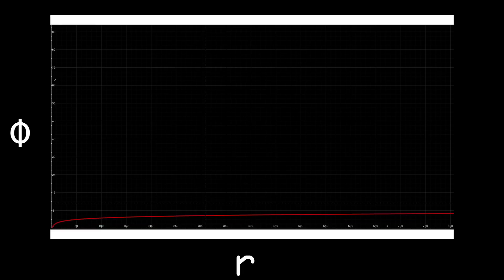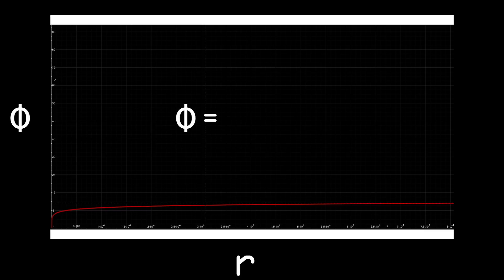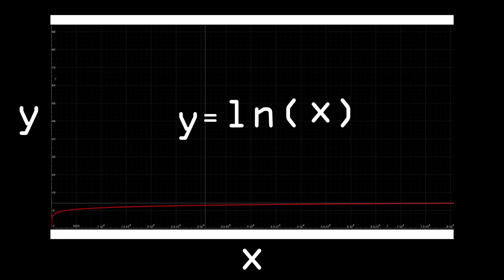If we graph phi against r and zoom out, we see they are related according to the natural logarithm. This means the natural logarithm of the distance is related to the number of rotations. The graph of the natural logarithm is commonly written using the variable names y and x as y equals the natural logarithm of x. Notice the graph tapers off in the same way the density of primes gradually decreases.